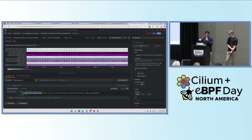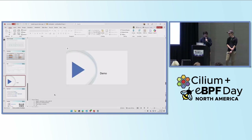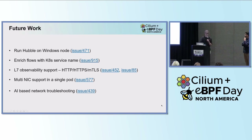That ends the demo. To round things off — there's obviously a lot of future work. Mainly, we want to run Hubble on Windows, something we've been working on for a while. We have an active issue open on the Cilium community and we're actively involved. We've done a couple of POCs. We also want to enrich flows with the Kubernetes service name — the difference between pods and services in Hubble is a little different, so some work is needed there.